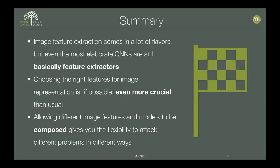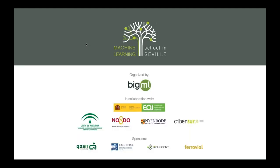To summarize: image feature extraction comes in a lot of flavors, but even CNNs — the fanciest things we can do with images — are still basically feature extractors, modulo those image-specific problems. Choosing the right features for image representation is even more crucial here than usual — you can really make or break your ability to solve a problem based on how you reduce an image to a feature vector. Finally, allowing image features and models to be composed gives you flexibility to attack problems in different ways: you might learn a cascade of classifiers, or choose simpler or more complex features depending on your problem. Hopefully BigML will give you all that flexibility to use to your advantage.